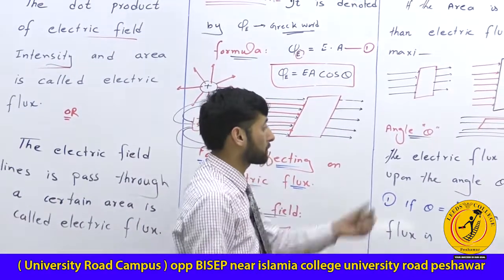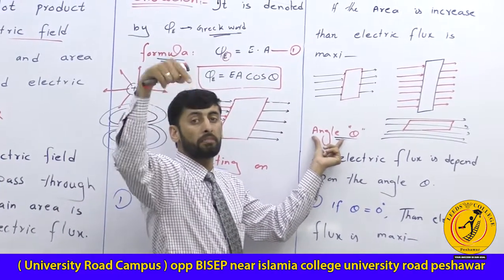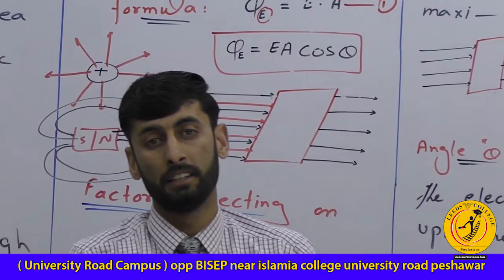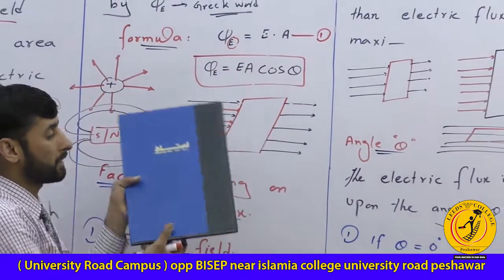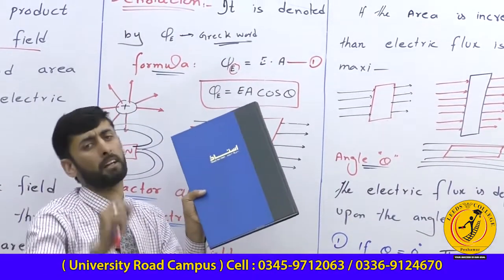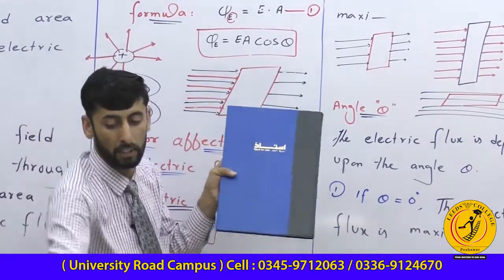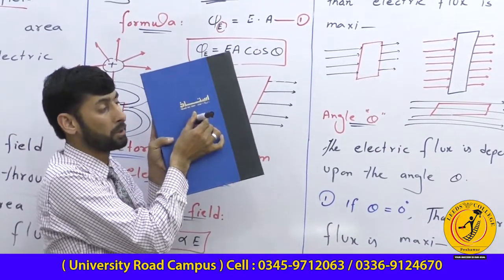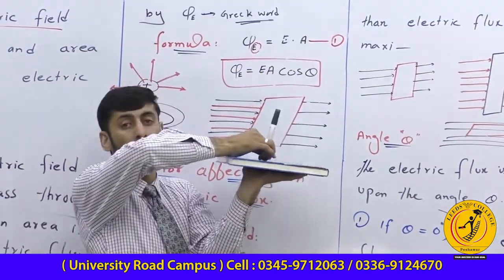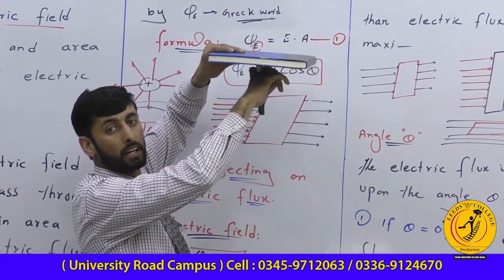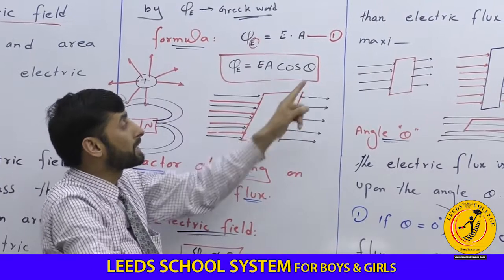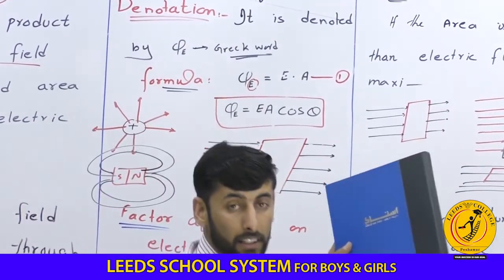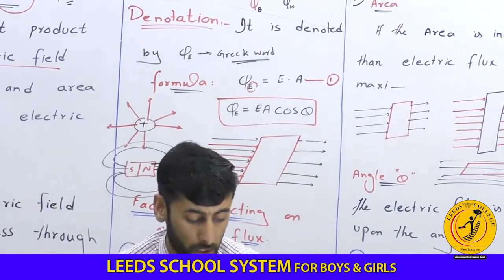The second point concerns the angle theta. The electric flux depends on theta, which is the angle between the electric field and the normal vector to the surface. The normal vector is perpendicular to the plane of the surface area. The angle theta is measured between the electric field direction and this normal vector.